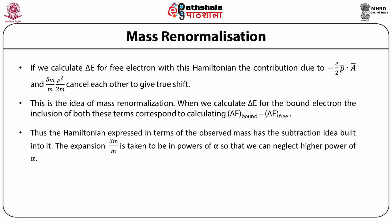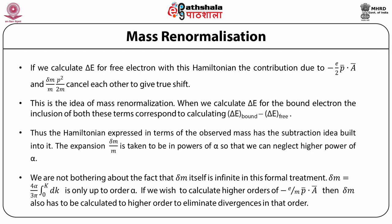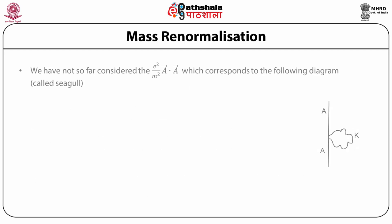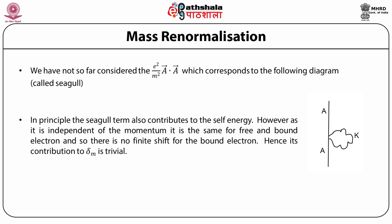The expansion delta m by m is taken to be in powers of alpha so we can neglect higher powers of alpha. We are not bothering about the fact that delta m itself is infinite in this formal treatment. Delta m equals 4 alpha by 3 pi integral over dk from 0 to capital K, which is only up to order alpha. If we wish to calculate higher orders of minus e by m into p vector dot A vector, then delta m also has to be calculated to higher orders to eliminate divergences in that order. We have not so far considered the term e squared by m squared A vector dot A vector, which corresponds to the diagram called Seagull. In principle the Seagull term also contributes to self-energy. However as it is independent of momentum it is the same for free and bound electron, so there is no finite shift for the bound electron. Hence its contribution to delta m is trivial.